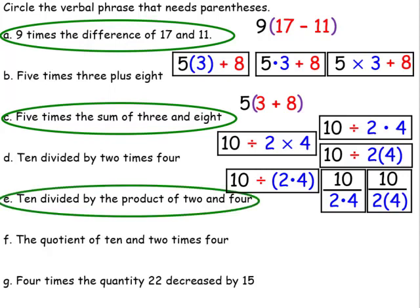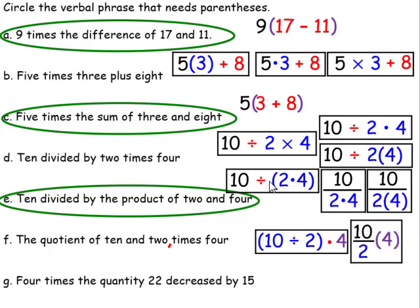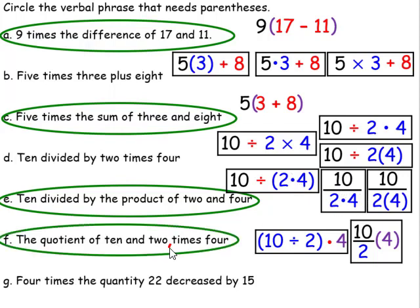Now for 'the quotient of ten and two times four' — this is a tricky one. If there's no comma, we're finding the quotient of ten and the quantity two times four, which gives 10 ÷ 8 = 5/4. But if there's a comma — 'the quotient of ten and two, times four' — it changes everything. We find 10 ÷ 2 = 5, then 5 × 4 = 20, which is an entirely different answer. Be mindful of when you have a comma or when you do not.